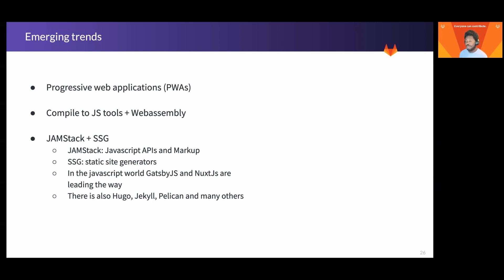Progressive web applications, or PWAs, aim to bridge the gap between web applications and native mobile applications. Typically, native applications require very specific languages and tools for their development—for example, iOS apps are written in either Swift or Objective-C. While native apps often provide the best possible experience and performance, progressive web applications can be built using just HTML, CSS, and JavaScript. They are increasingly gaining popularity due to their native app-like experience, speed and ease of development, and their ability to be served to a wide range of browsers, particularly on mobile devices.